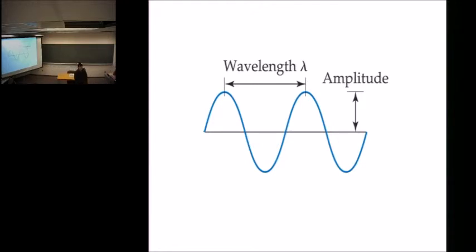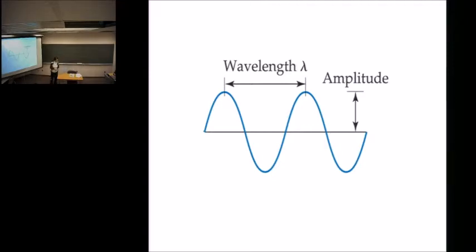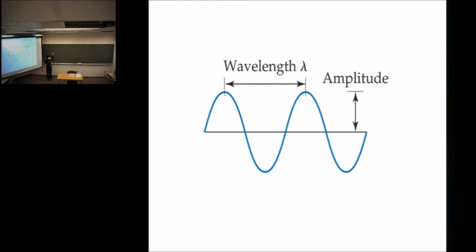So which ones did we say were inversely related? Frequency and wavelength are inversely related. And what was directly related? Energy and frequency. If frequency and wavelength are inversely related, that means one goes up, the other goes down, so when you multiply them together you get a constant. One goes down, the other goes up — so when you multiply them together you get that same constant. That constant would be the speed of light. So one of the equations we'll be using a lot is: c equals wavelength times frequency.